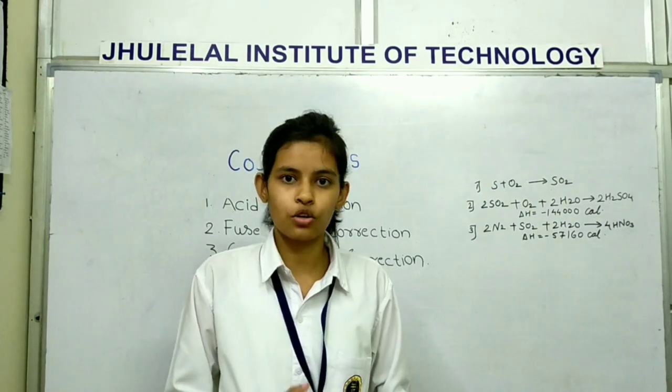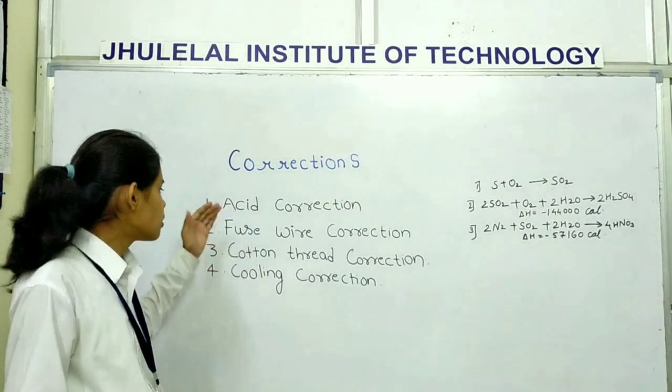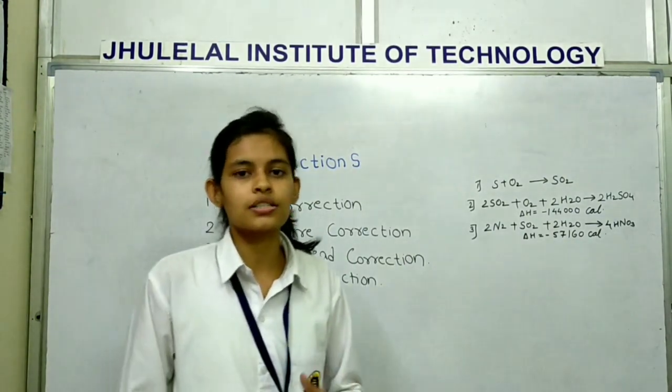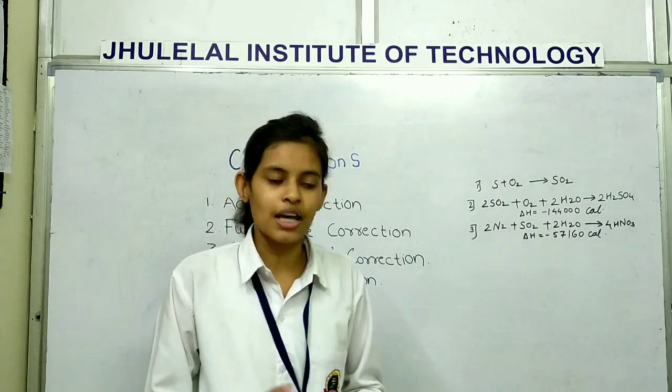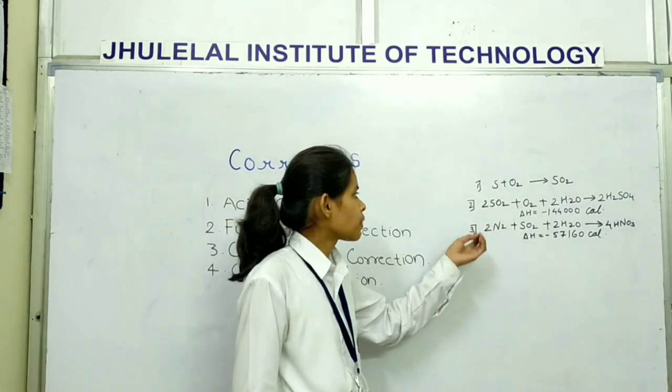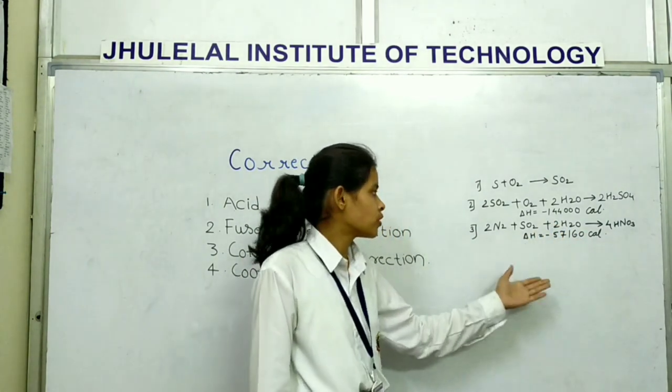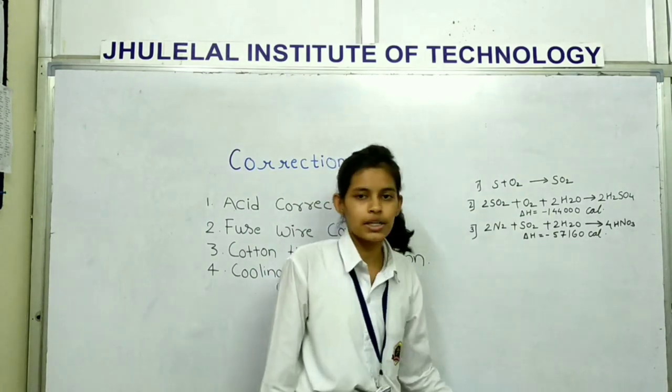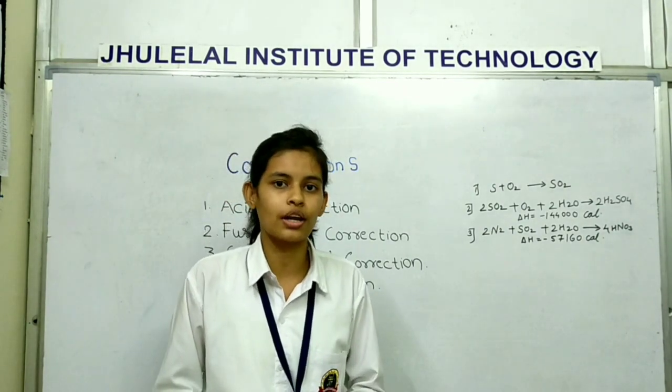Estimation of bomb calorimeter - we have some corrections. We have some reactions: S plus O2 gives SO2. 2SO2 plus O2 plus 2H2O gives 2H2SO4. 2N2 plus 5O2 plus 2H2O gives 4HNO3. The heat liberated is not obtained in practical use as SO2 and NO2 are escaped.